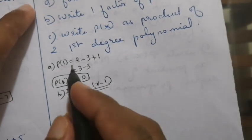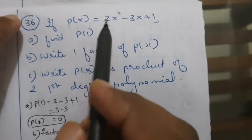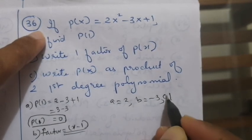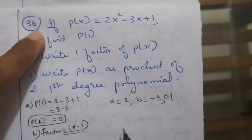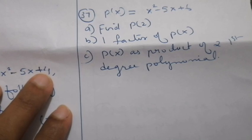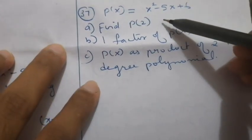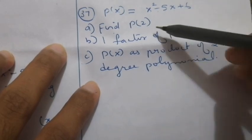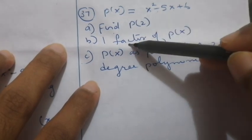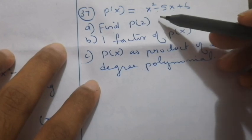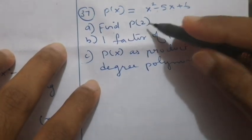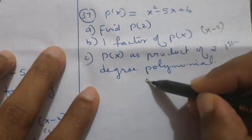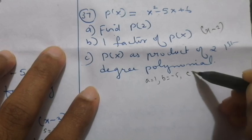Write x squared minus 5x plus 6 as the product of two first degree polynomials and solve. Find p of 2: 2 squared minus 5 times 2 plus 6 equals 0. Since p of 2 equals 0, x equals 2 is the solution and one factor is x minus 2. To factor fully, use a equals 1, b equals minus 5, c equals 6 with the quadratic formula.